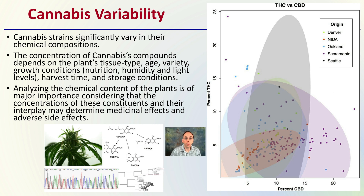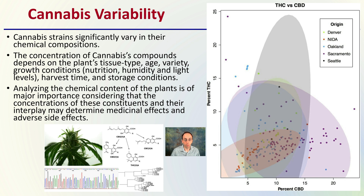Cannabis strains significantly vary in their chemical compositions. The concentration of cannabis compounds depends on the plant's tissue type, age, variety, growing conditions such as nutrition, humidity and light levels, harvest time, storage conditions, and many other things. Analyzing the chemical content of the plants is of major importance, since the concentrations of these compounds and their interplay may determine medical effects and potentially adverse side effects. So getting a good idea of what compounds are actually present is well worthwhile.